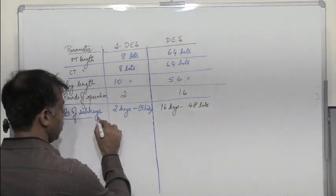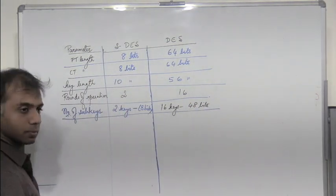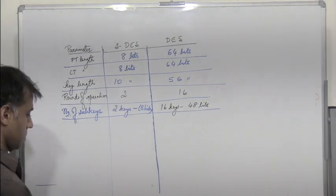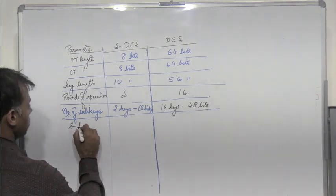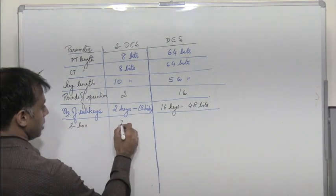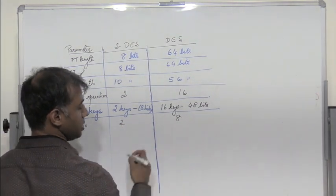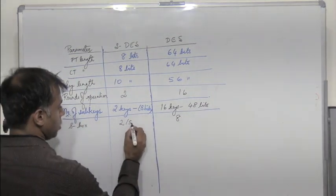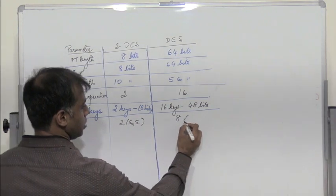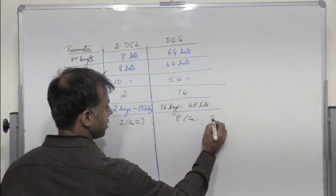Next S boxes. When we talk about S boxes there are 2 S boxes in S-DES, and in DES there are 8 S boxes. S0 and S1 in S-DES, and S0 to S7 in DES.